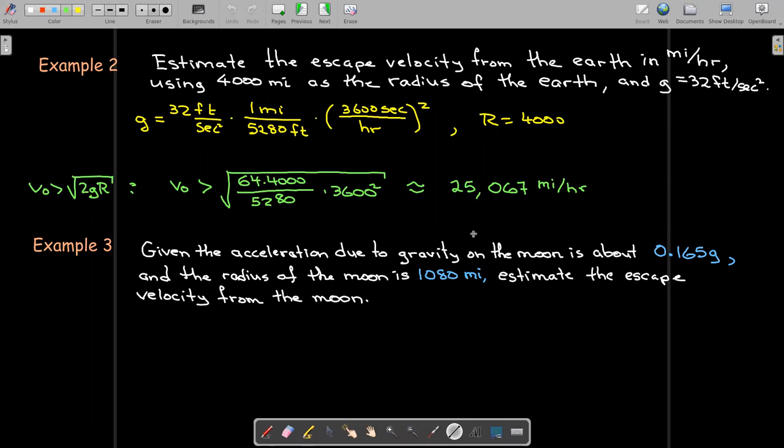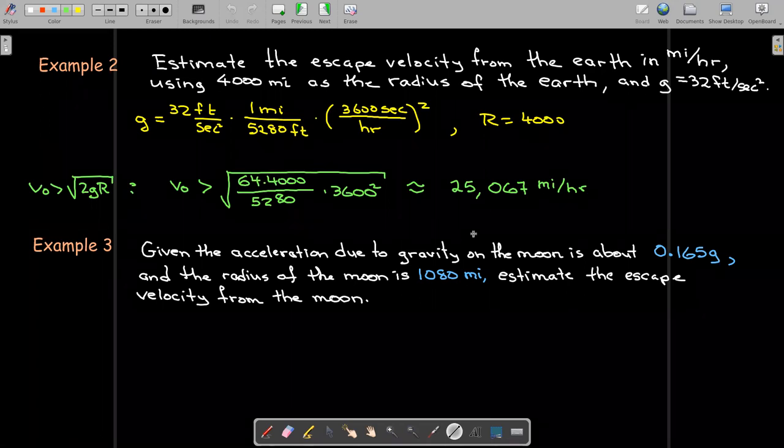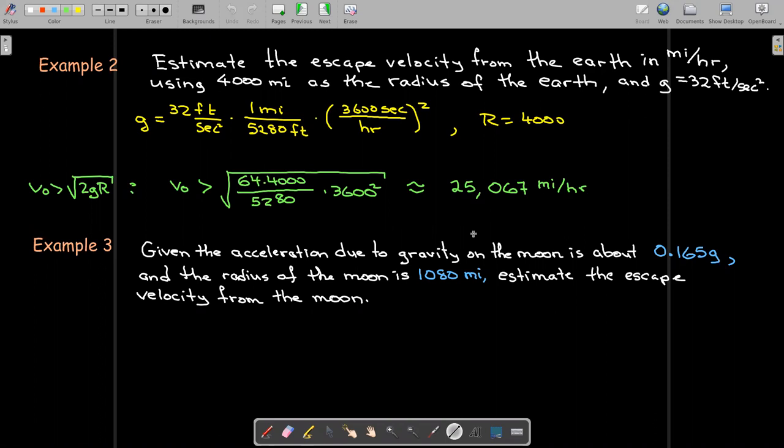What would the escape velocity be on the Moon? We're told here that the acceleration due to gravity on the Moon is about 0.165g, where g is the acceleration due to gravity on Earth. So it's about one-sixth of the acceleration. We're going to use an estimate of 1,080 miles for the radius of the Moon, and we'll use that information to calculate the escape velocity.